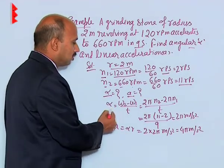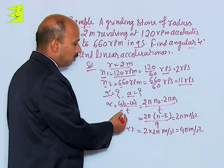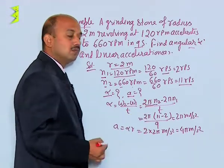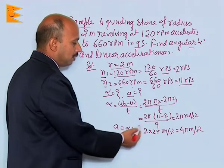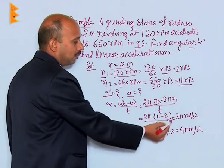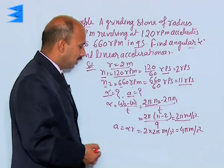So we know that alpha is equal to omega 2 minus omega 1 divided by t. Omega 2 is equal to 2 pi n2 and omega 1 is equal to 2 pi n1 upon t. By putting the values n2 and n1 we have got 2 pi radian per second square, that is the value of alpha.